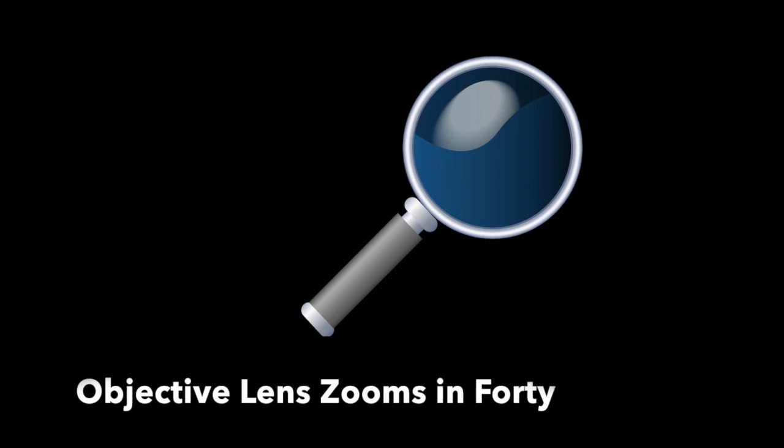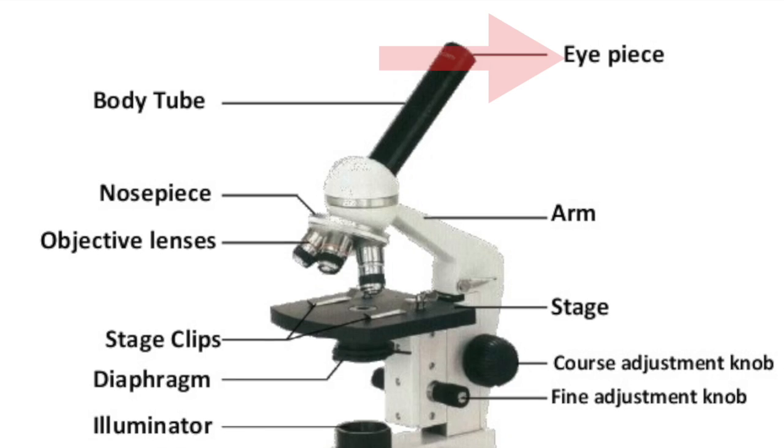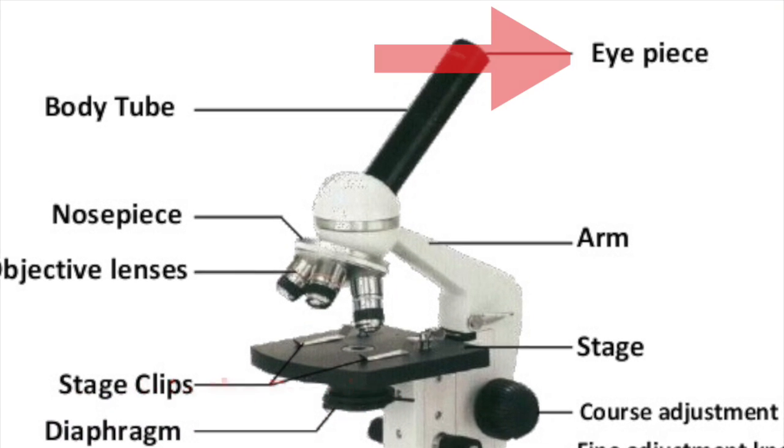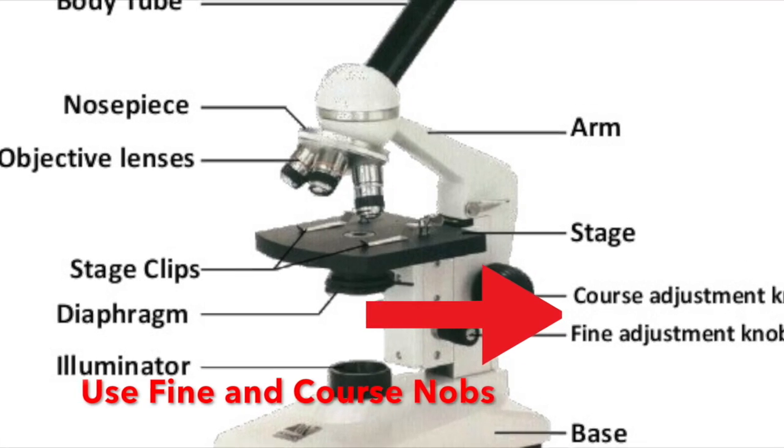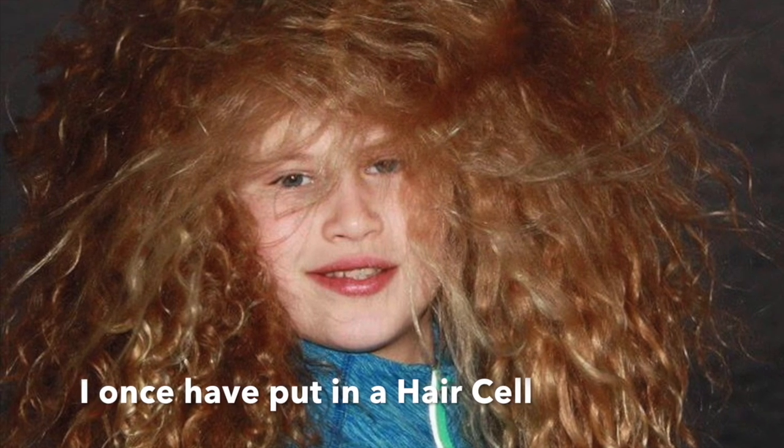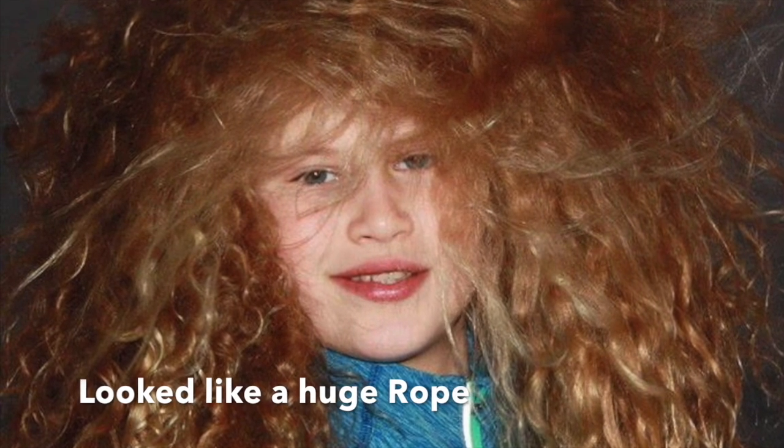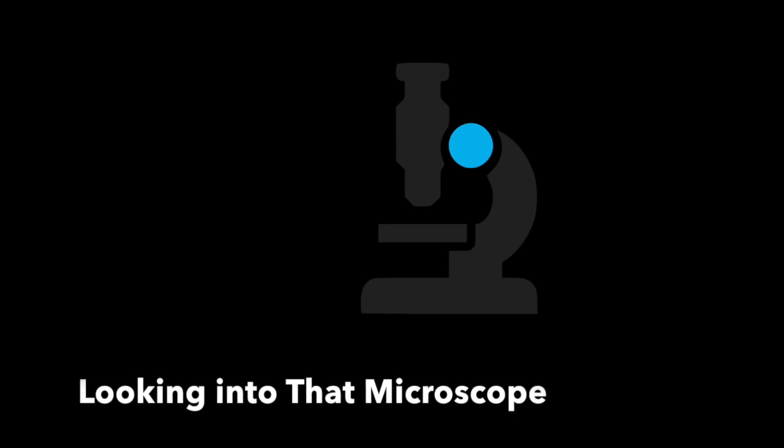Objective lens zooms in 40 times magnification. Look in the eyepiece, use fine and coarse knobs. Once put in a hair cell, looked like a huge rope. Looking into that microscope, it'll blow your mind.